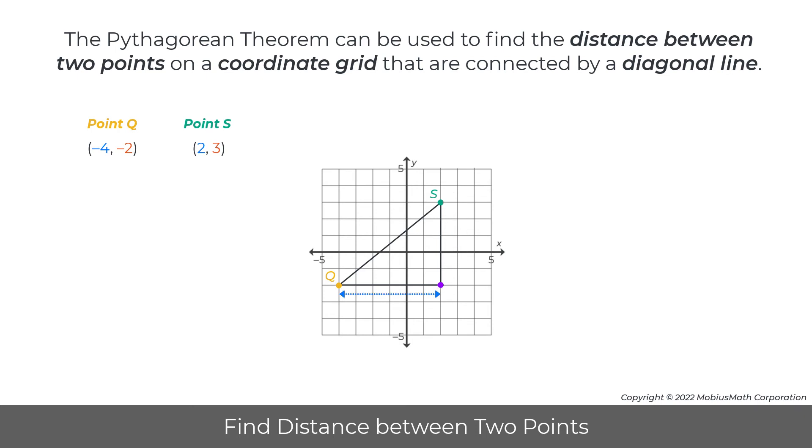The lengths of the horizontal and vertical legs of this right triangle can be calculated using the strategies outlined in the previous two examples. Then, these lengths can be substituted into the Pythagorean theorem to find the diagonal distance between the two points.